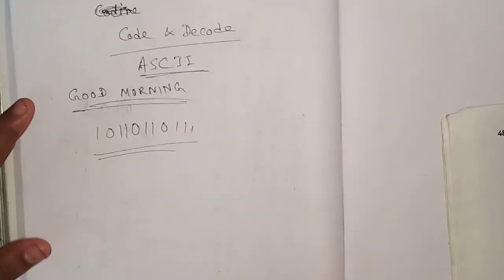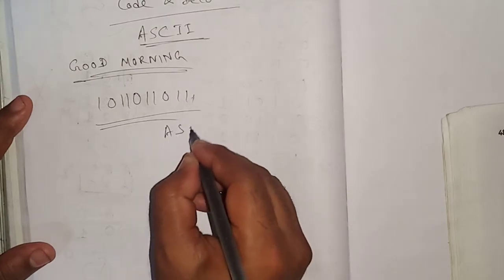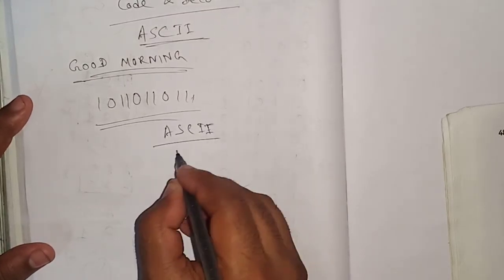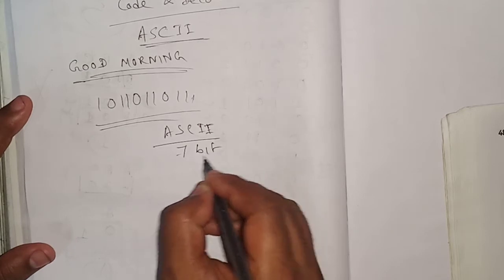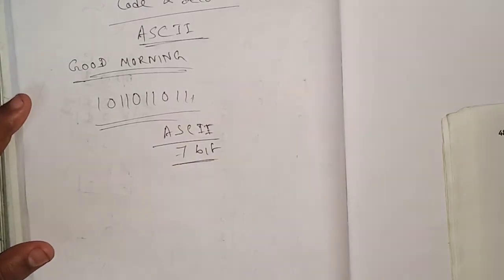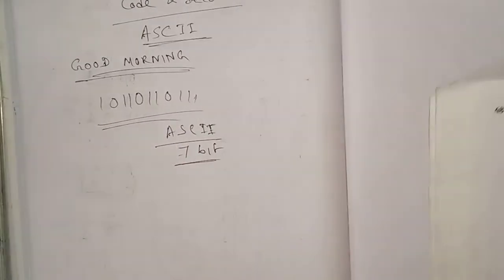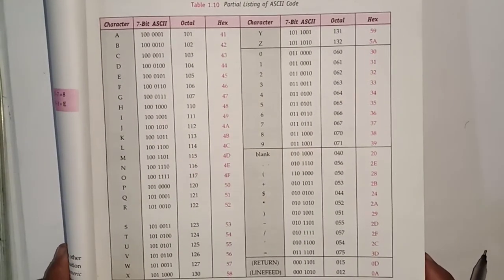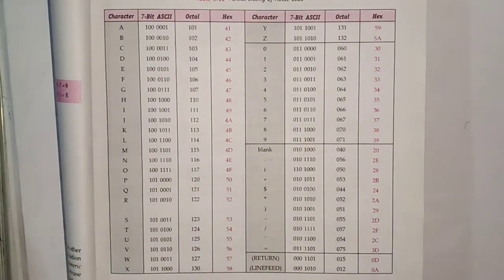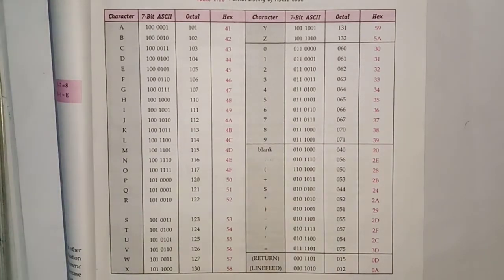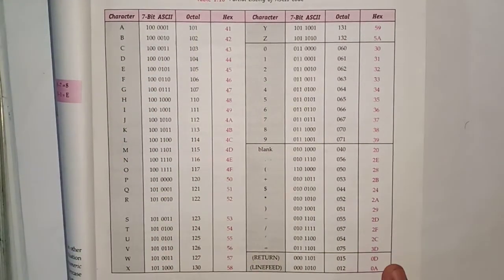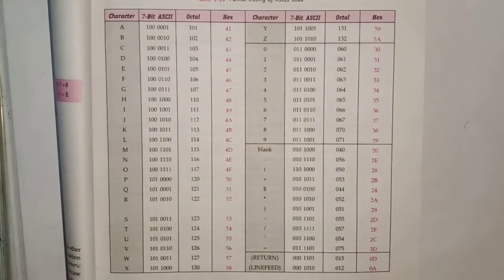ASCII is a 7-bit code. You can see a diagram — I will show you the diagram. This is a long diagram. You don't need to remember everything. I am telling you just a few things to remember, and the remaining portion will be automatically created.